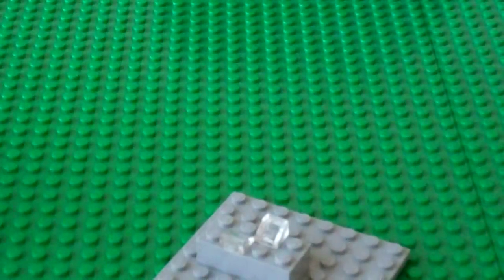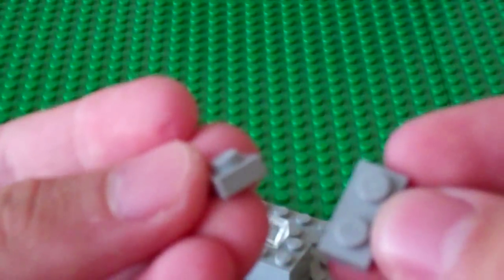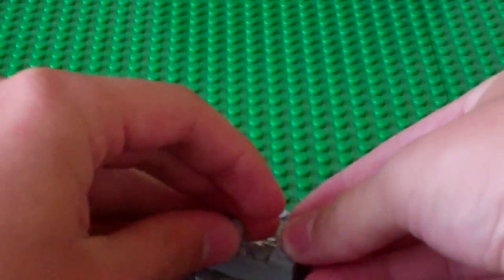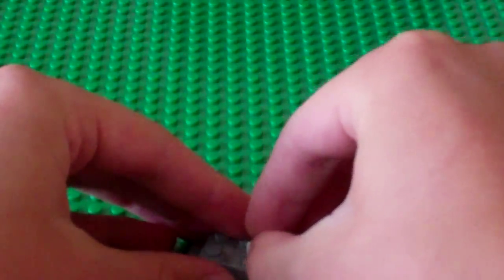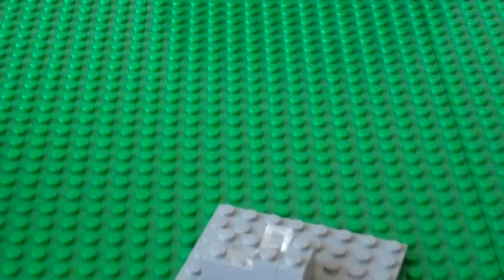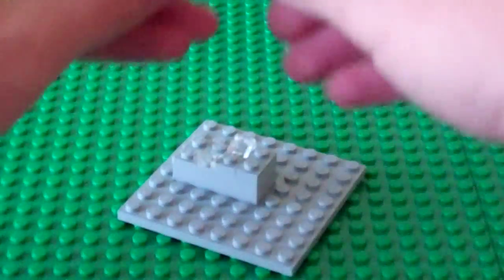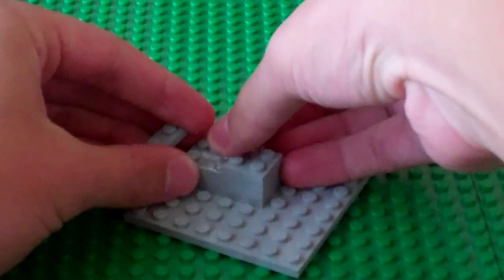And then I'm going to get 2 corner plates or you can get a 1x1 plate and a 1x2 plate like I'm doing. And then I'm going to put that right there. And then another one right there.